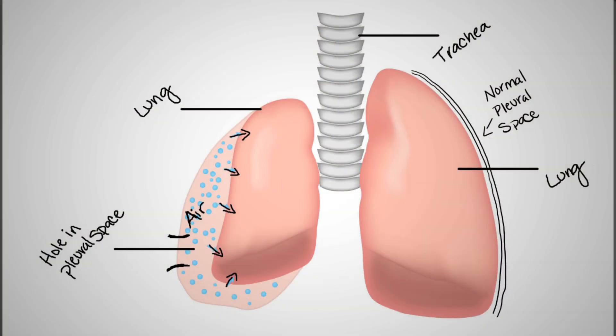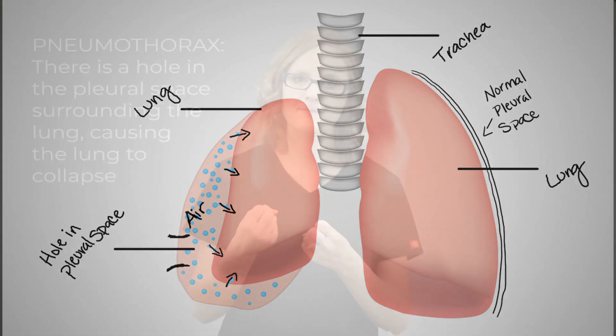A pneumothorax occurs when air actually gets inside that pleural space from a hole. When air gets inside that pleural space, it creates a pressure difference that causes the lung to collapse — only one lung, not two, just one.